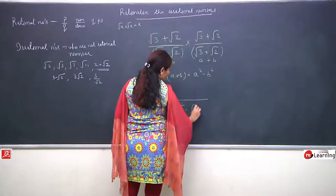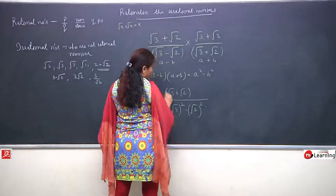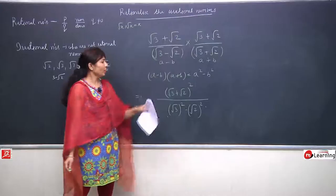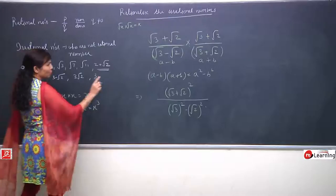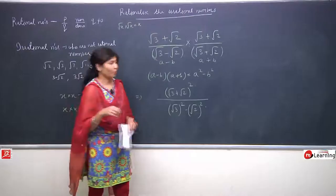Now solving this: the denominator becomes a² - b², which is (root 3)² - (root 2)² = 3 - 2 = 1. But in the numerator, we have the same term (root 3 + root 2) multiplied by (root 3 + root 2), which becomes (root 3 + root 2) whole squared, because same term times same term becomes x squared.